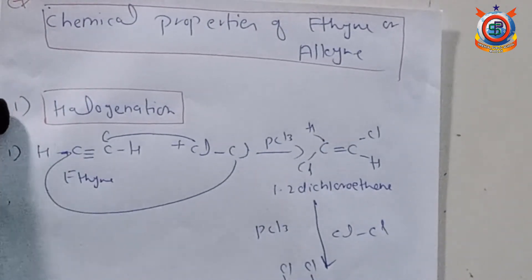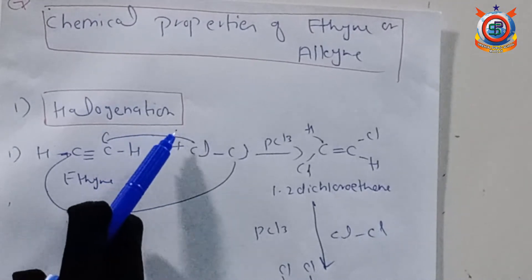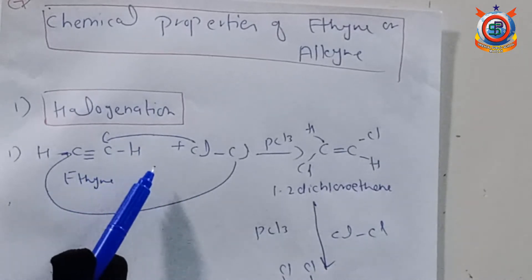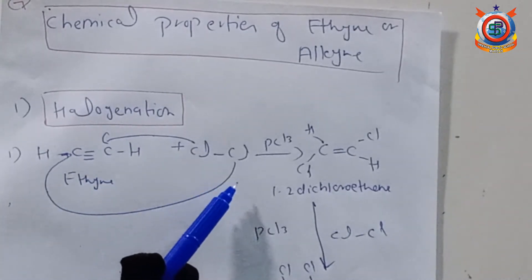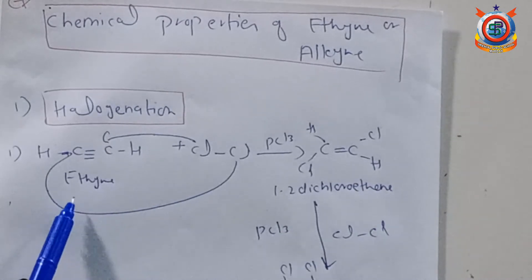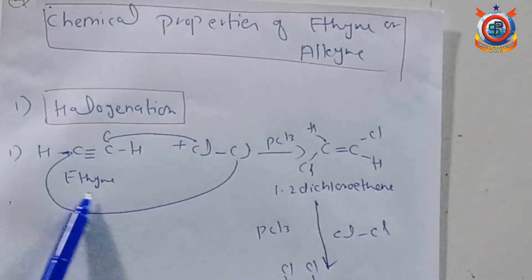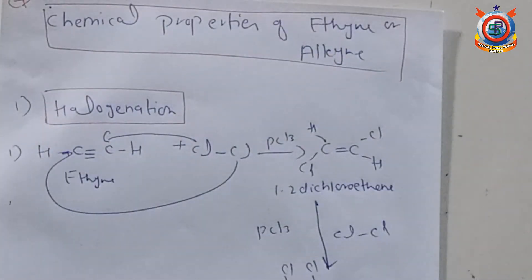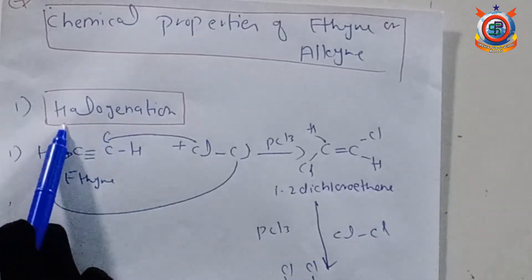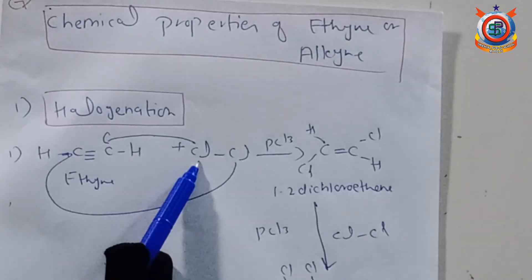The first chemical property is halogenation. Halogenation is the addition of a halogen. You can see here: when we take ethyne, we can convert it — ethyne reacts and we can observe the chemical properties of ethyne through these conversions.